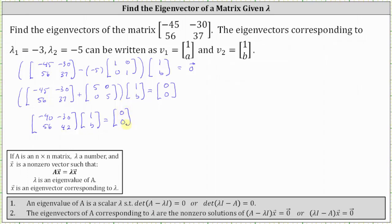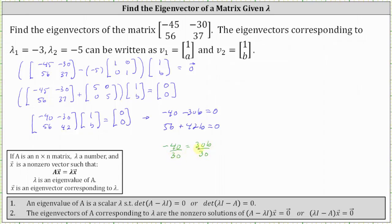Again we only have one variable here. The corresponding system of equations: the first equation is negative 40 times 1, or negative 40, plus negative 30 times b, or minus 30b, equals 0. The second equation is 56 times 1, or 56, plus 42 times b equals 0. We can solve either equation to find b. Solving the first equation, let's add 30b to both sides, giving us negative 40 equals 30b. Dividing both sides by 30 and simplifying, we get b equals negative 4 thirds.